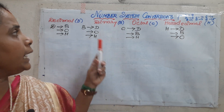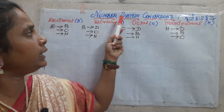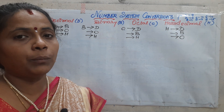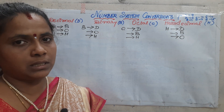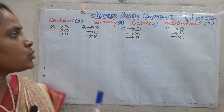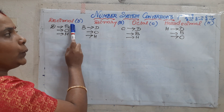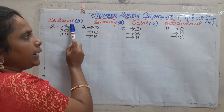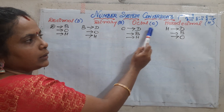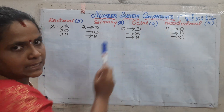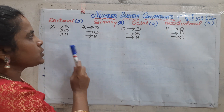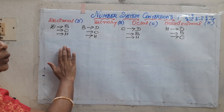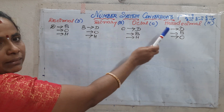In this session we will be seeing the different types of number system conversions. In the last class we saw the different types of number systems. We know that there are 4 types: binary, decimal, octal, and hexadecimal. Now we will see the conversions — there are totally 4 systems, so there are 12 conversions in all.